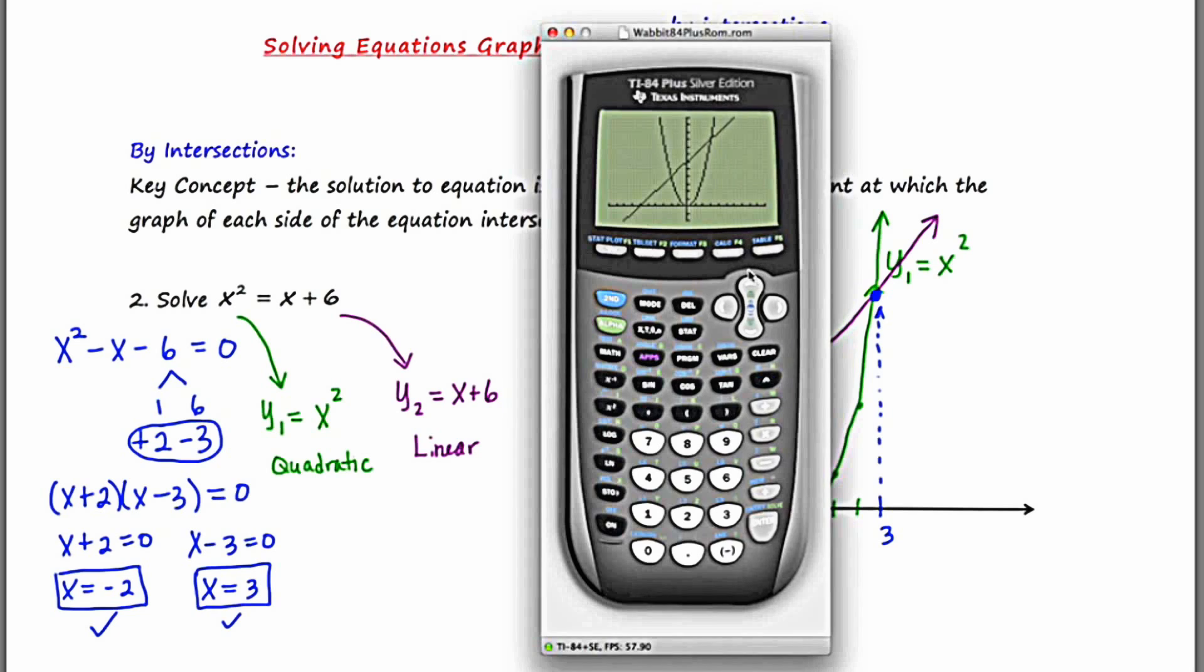So now there are two. So the process that I did in example one, I'm going to have to do twice. Let's commit right now to finding the intersection point on the left. Second, trace, five. Then like the video game, I'm going to move the cursor over to the point of intersection on the left.